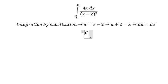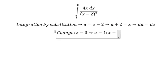Next, we need to change the boundary. If x equals number three, then u should be about number one. If x equals number eight, then u should be about number six.